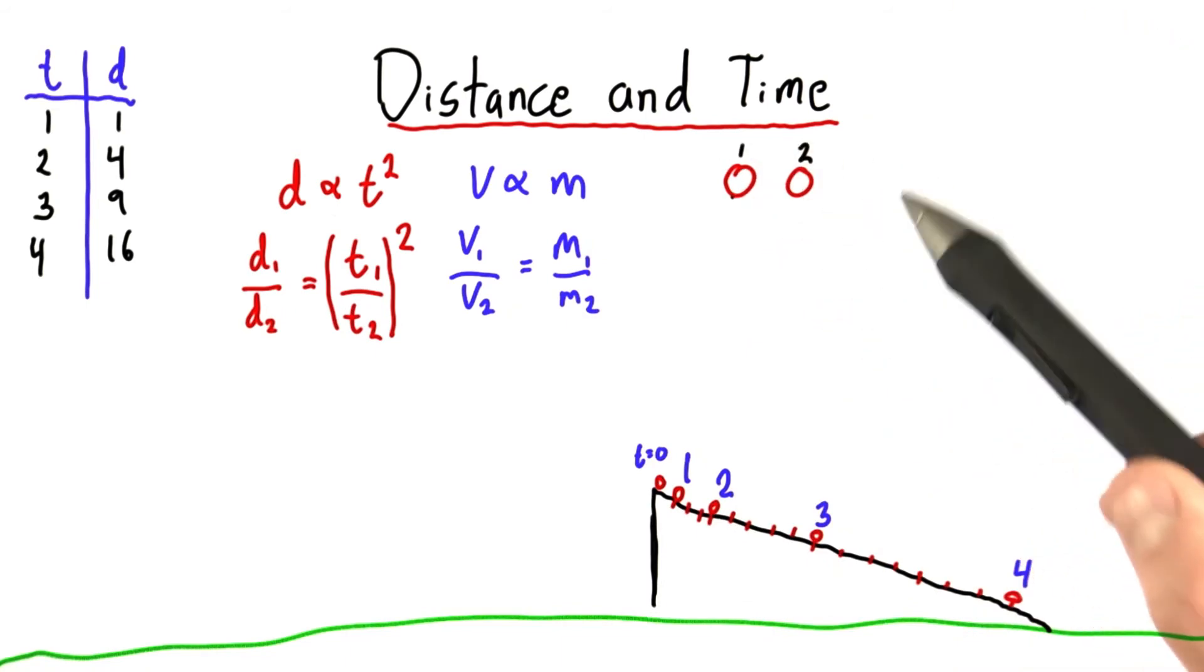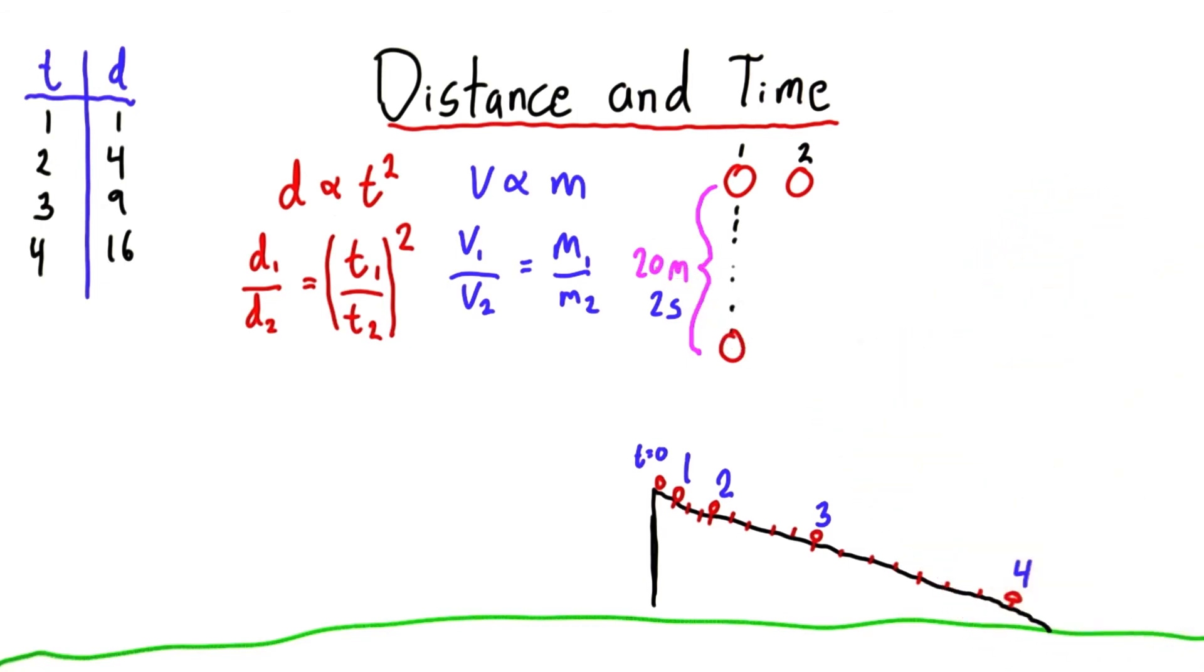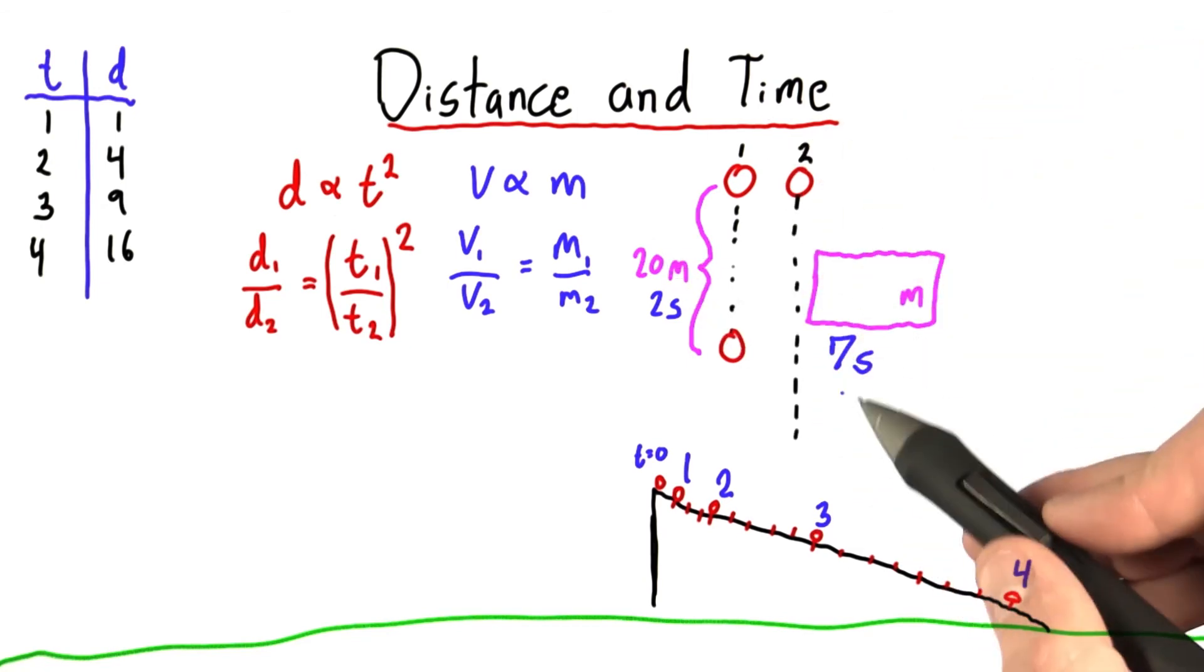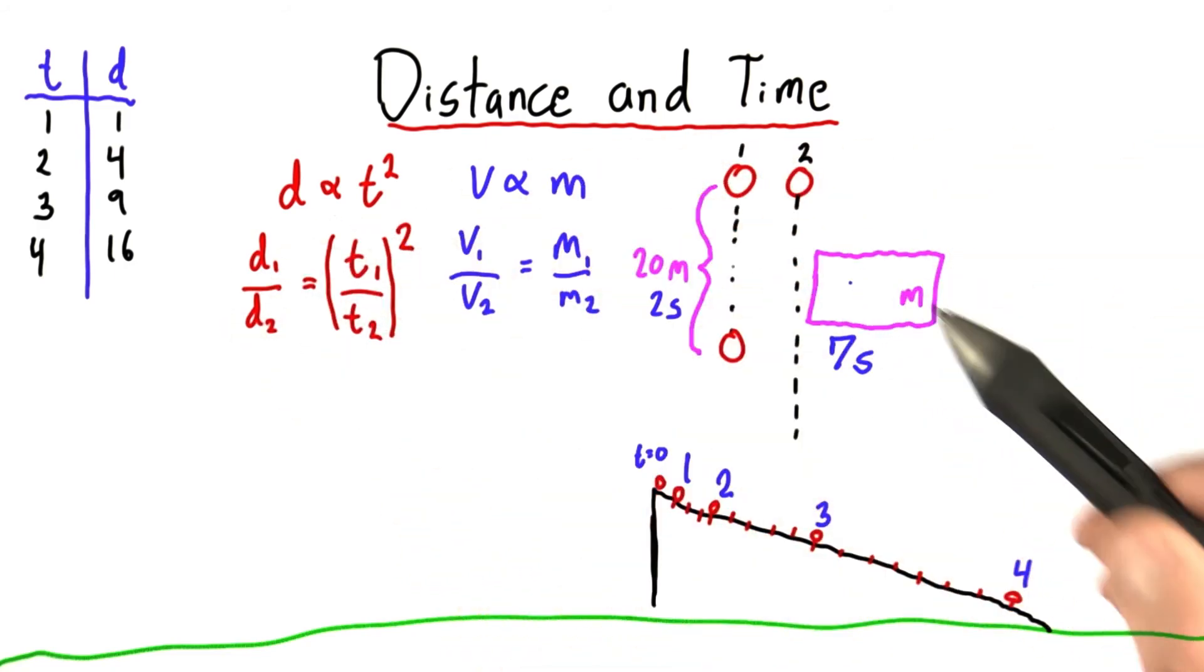We have two identical balls, which will number 1 and 2. I let this first ball fall for 2 seconds, and it falls a distance of 20 meters. If I let this ball fall for 7 seconds, how many meters will it fall? And you can use this equation and enter your answer here.